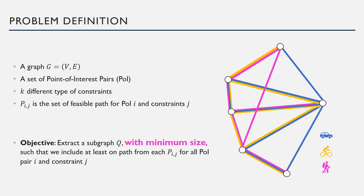You can think of each constraint corresponding to a type of transportation. For example, the set of feasible edges for a car may not necessarily be feasible for a bike or a pedestrian.